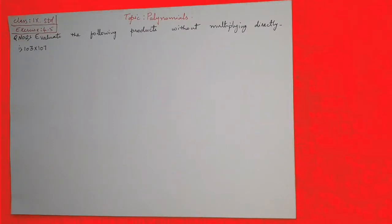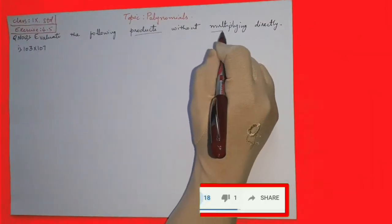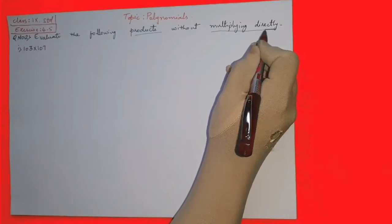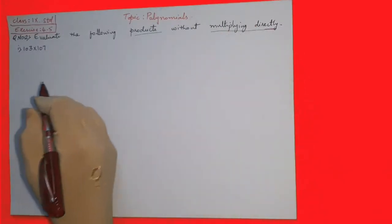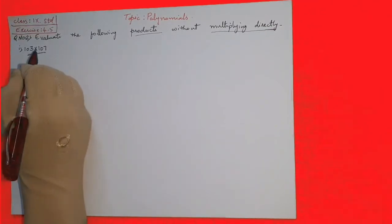Hello everyone, now the polynomial Exercise 4.5 Question Number 2. Evaluate the following products without multiplying directly. Without multiplying directly means you have to use the identities to find their products.